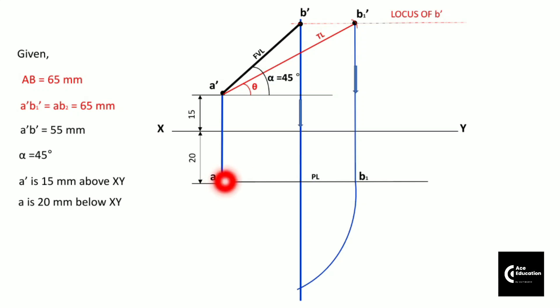And as plan length is always equal to top view length in measurement, we can take A as center and AB₁ as radius. Draw an arc. Now this arc, wherever it will meet this projector line of point B, that point will become point B.